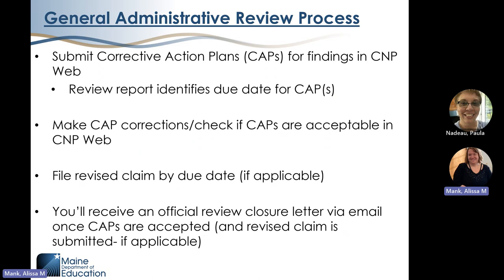If you have findings of non-compliance, your review report will give you instructions for writing your corrective action plans and the due date for them. You'll submit your corrective action plans in CNPweb. If your plans need corrections or more information, we'll let you know in CNPweb and you'll submit corrections through the system as well. If you are required to return money, we'll have you file a revised claim in CNPweb so the overpayment will be deducted from your next CACFP reimbursement. Once all corrective action plans are complete and a revised claim filed if needed, you'll receive a review closure letter by email and your review will be marked as closed in CNPweb.